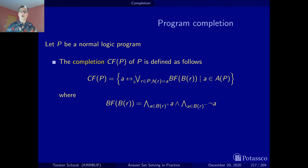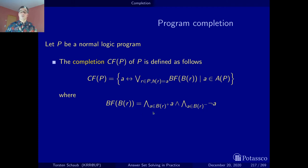We look at all the rules that have atom A in the head, and we make the disjunction of these rules by disjoining their bodies. The body of a rule is a set: we take all the positive atoms and conjoin them, then conjoin with the negations of all the negative atoms. This is simply a syntactic transformation turning a rule body (a set) into a conjunction.